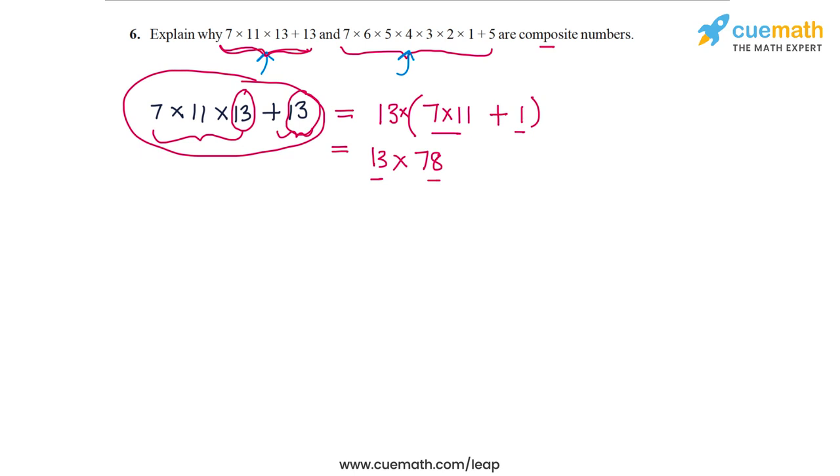Now let's take the second number, which is 7 times 6 times 5 times 4 times 3 times 2 times 1, and then there is a plus 5. Now again, what's special about this expression?